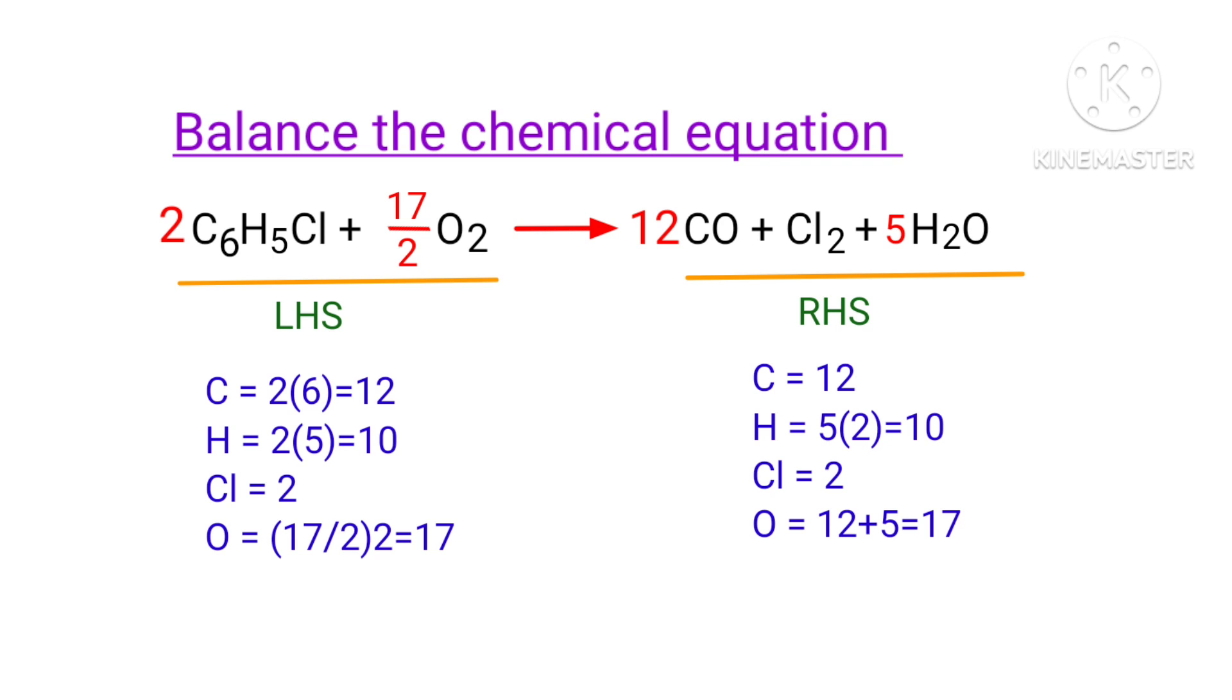In this equation, 17 by 2 is a rational number. We don't use rational numbers for a chemical equation. So to get whole numbers, we need to multiply this equation by a coefficient of 2.